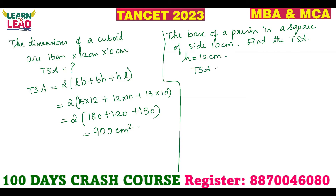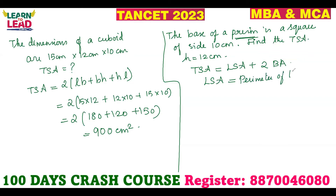The total surface area of a square prism equals lateral surface area plus 2 times the base area. The lateral surface area formula for a prism is: perimeter of the base × height. Since the base is a square, the perimeter is 4a, so the total surface area formula becomes: 4ah + 2a².